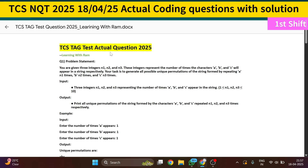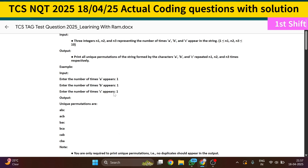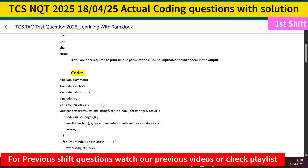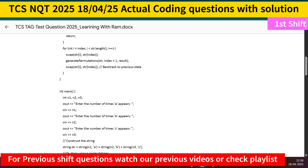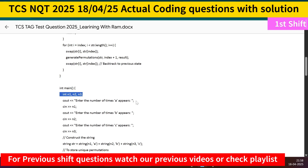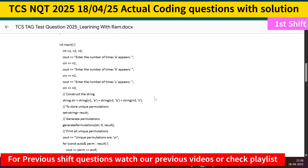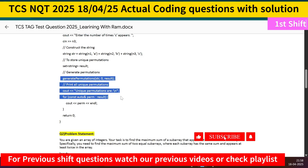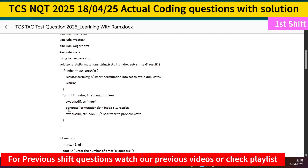This is the same TCS tag test question. The input method may differ — here I'm taking input as n1, n2, n3 separately and constructing the string, whereas in some versions you take the string directly using getline or in Python using direct input. The logic remains the same. I'm calling the generate_permutation function, passing the string, and printing the result.